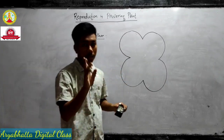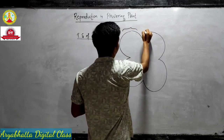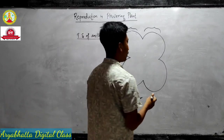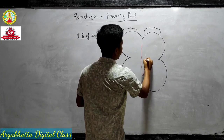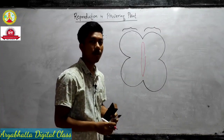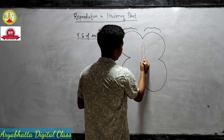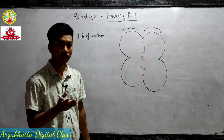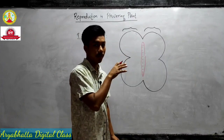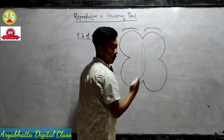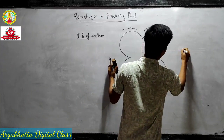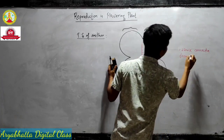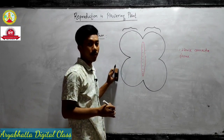When we cut the anther we find a structure like this. We find two lobes — this is one lobe, this is another lobe. At the center there is a tissue which connects with the filament. This tissue is called sterile connective tissue. When we cut and observe under the microscope, we find this structure with one lobe on each side.